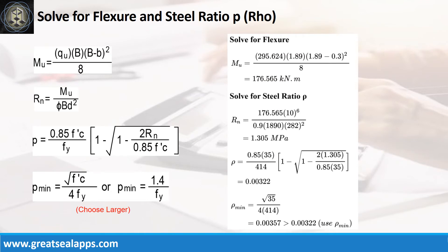Given ultimate soil pressure equals 295.624 kPa, footing width equals 1.89 m, and column size equals 300 mm, the maximum moment is 176.565 kN-m.